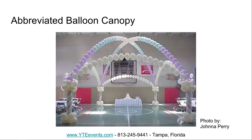The abbreviated balloon canopy is the best of all worlds. It combines the crisscross canopy to get the over-the-center feel and the square canopy to get the clearly marked dance floor. They work together to create what is called the abbreviated balloon canopy — an elegant way to create a beautiful dance floor without the cost of the full balloon canopy.